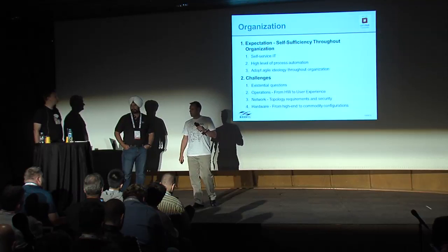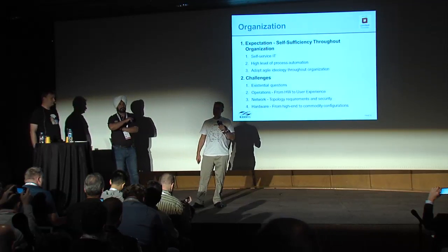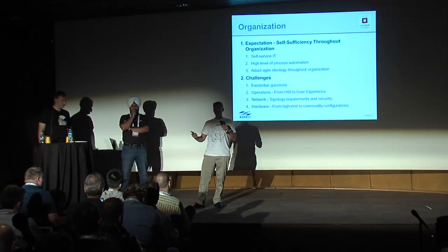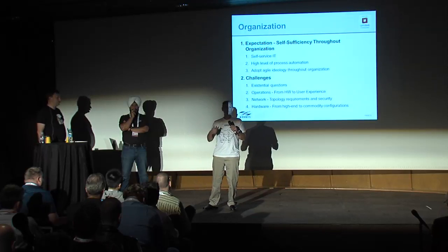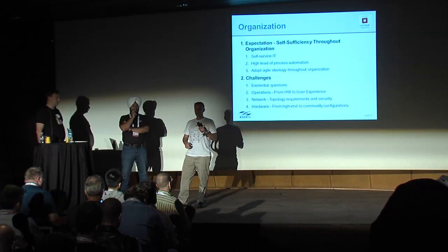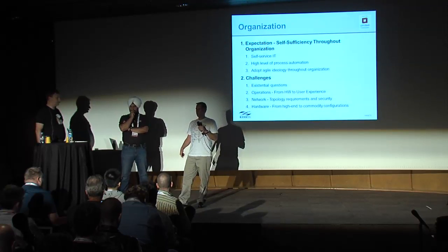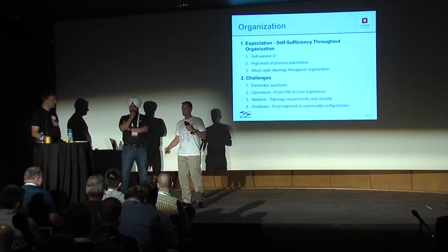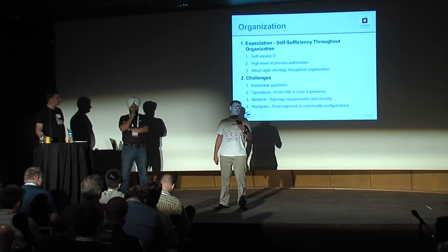At the organizational level, the expectation is creating self-sufficiency — push-button IT, lots of automation, and agile pervasive throughout the whole company. Challenges include existential questions: some departments wonder if they have a role after the project. Operations teams have traditionally been hardware-focused and must now focus on user experience. Network topologies for cloud may not align with security policies or traditional networking. Hardware procurement processes may need to change toward commodity hardware.